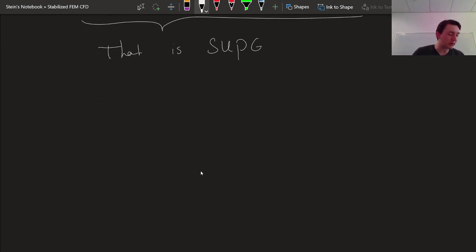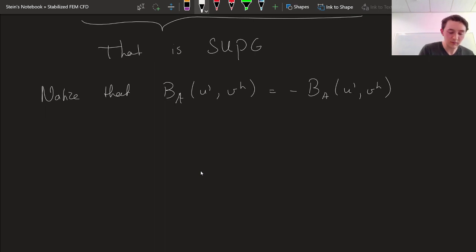In order to do that, you have to realize something about the advective part of the bilinear form. So notice that BA U' Vh is anti-symmetrical. It is equal to minus BA Vh U'.